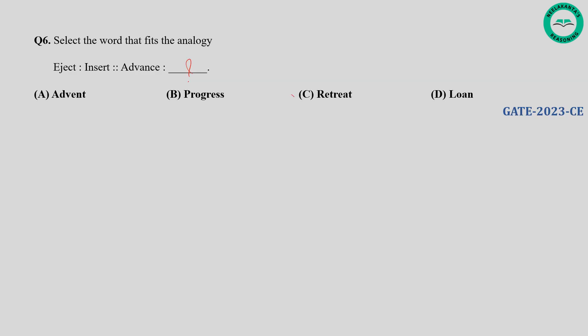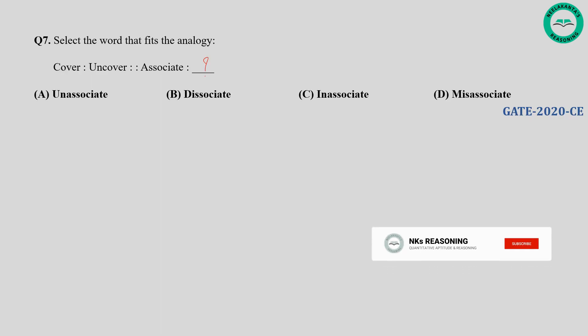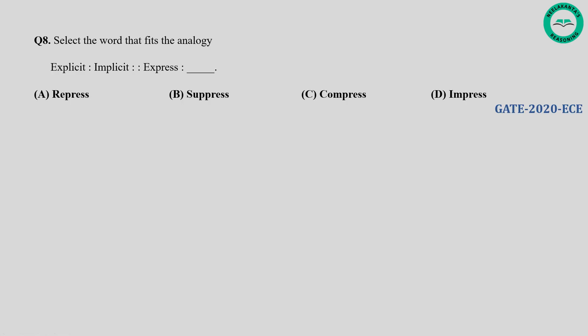Question number seven: Select the word that fits the analogy — Cover, Uncover, Associate, blank. The relationship in the first pair is that uncover is the opposite of cover. Similarly, the opposite of associate would be disassociate. So option B is the right answer.